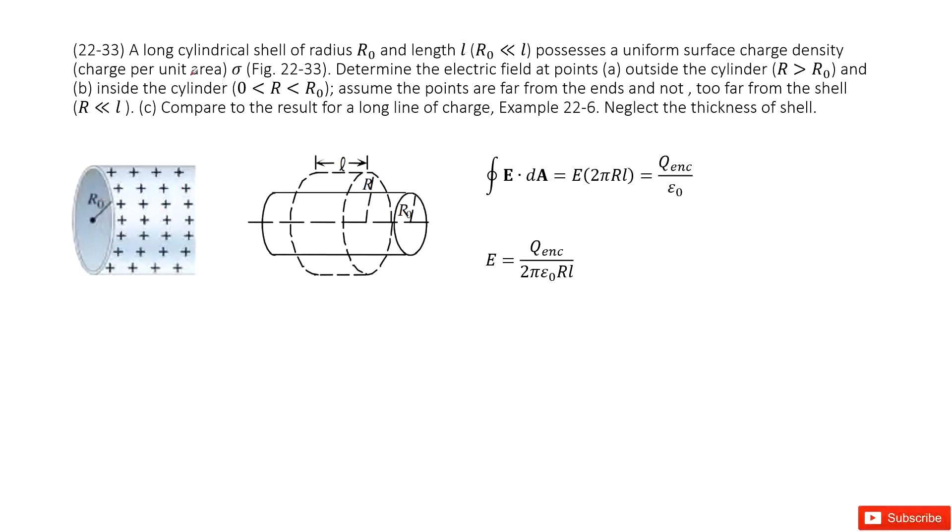We can look at this system. We have a long cylindrical shell. The radius R₀ is given, length L is given. And we find the uniform surface charge density is σ. We need to determine the electric field at different locations.